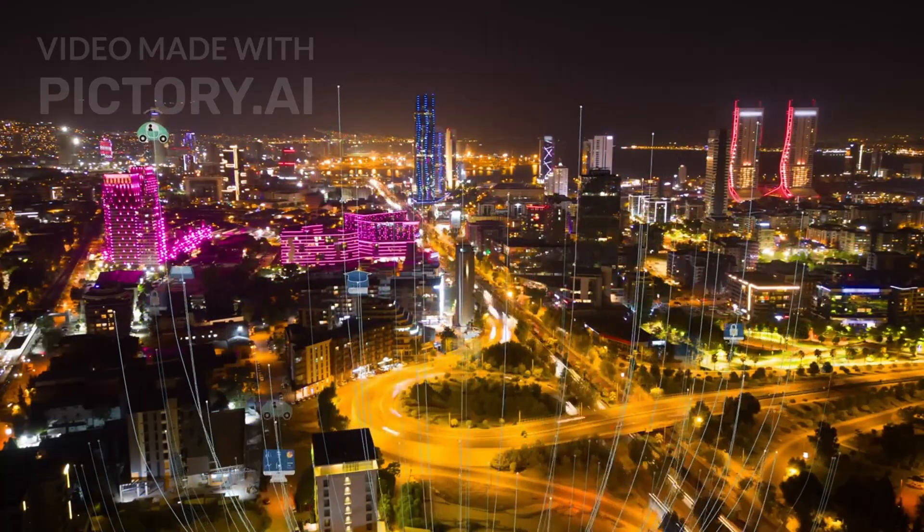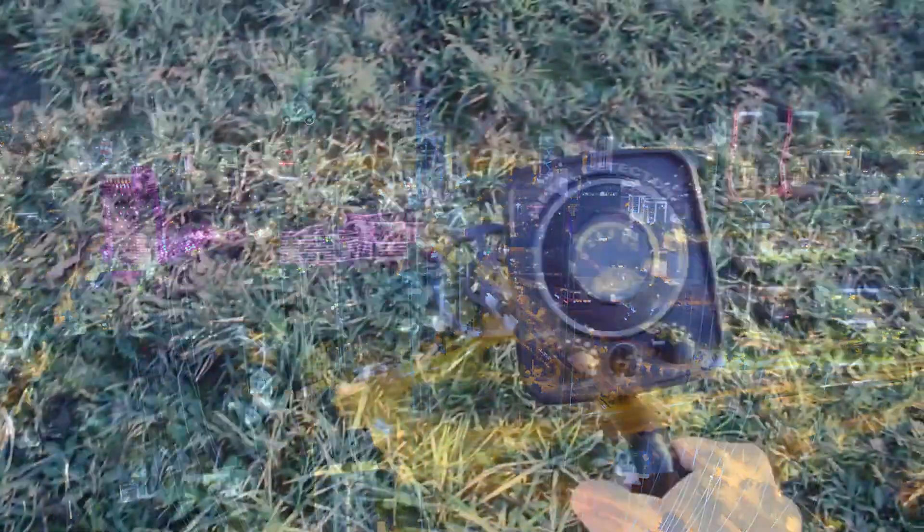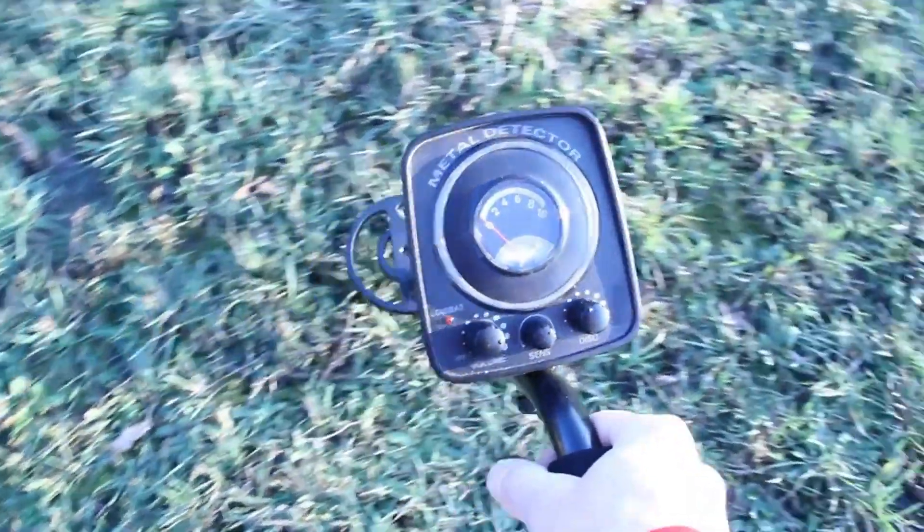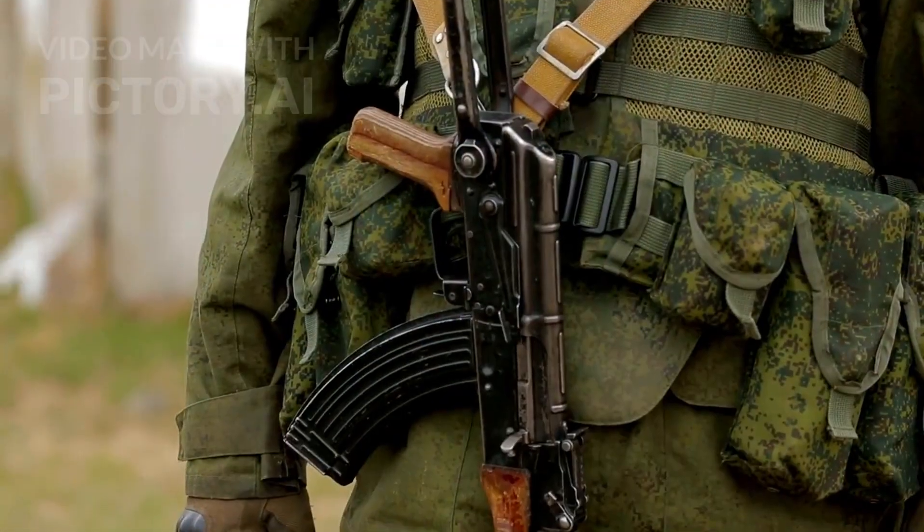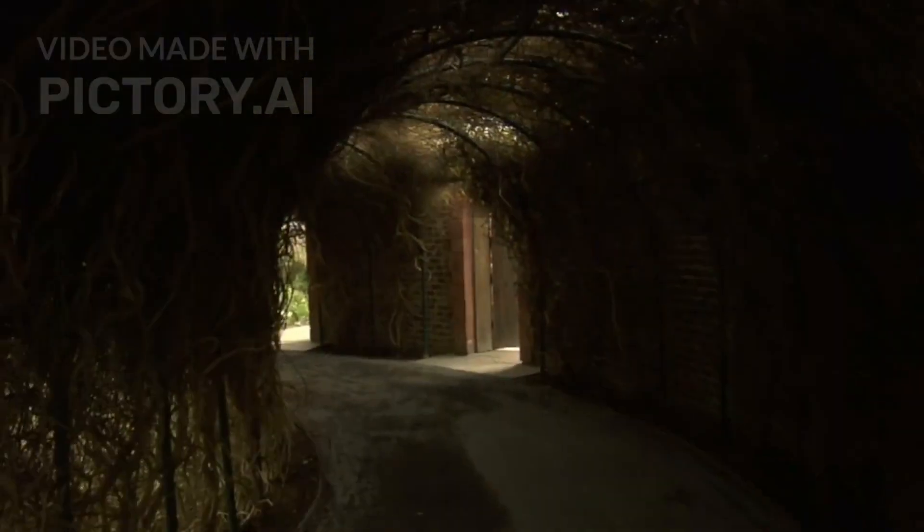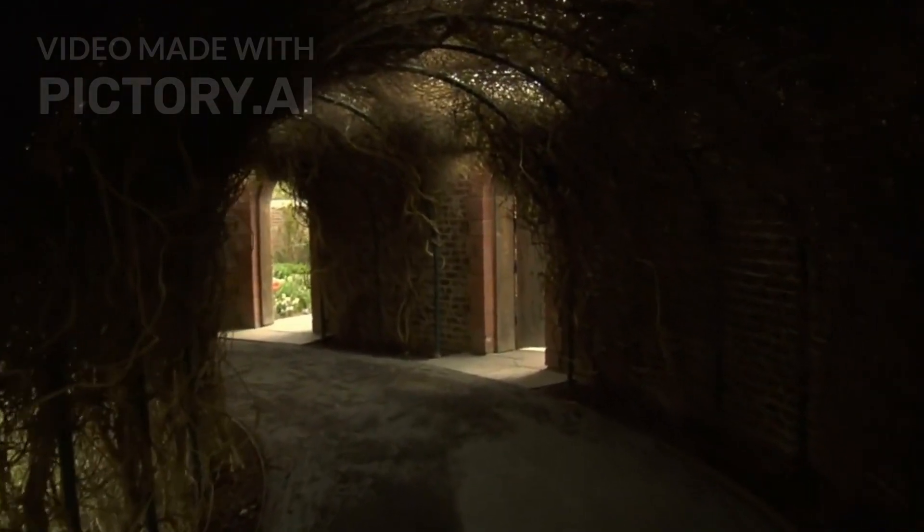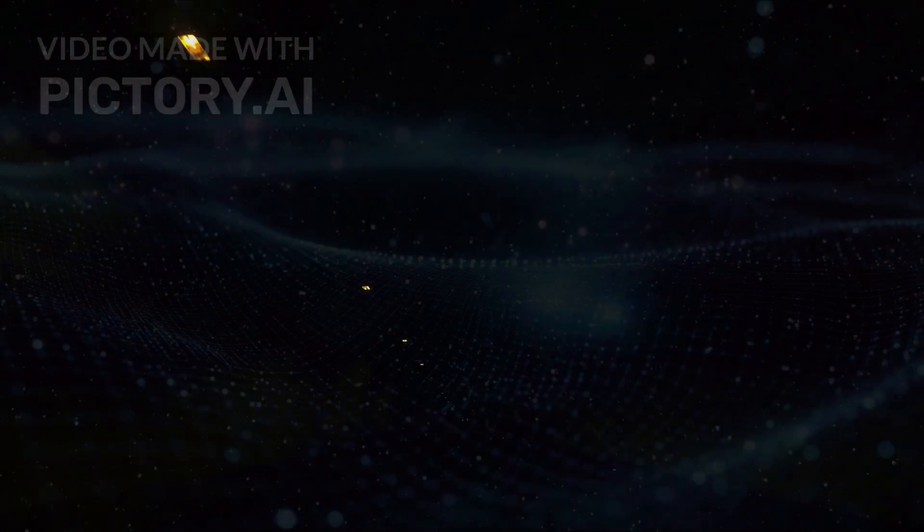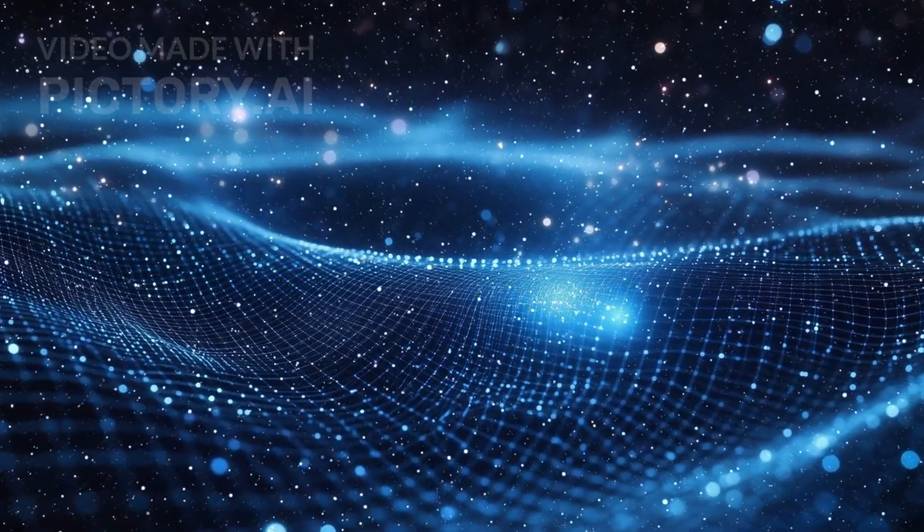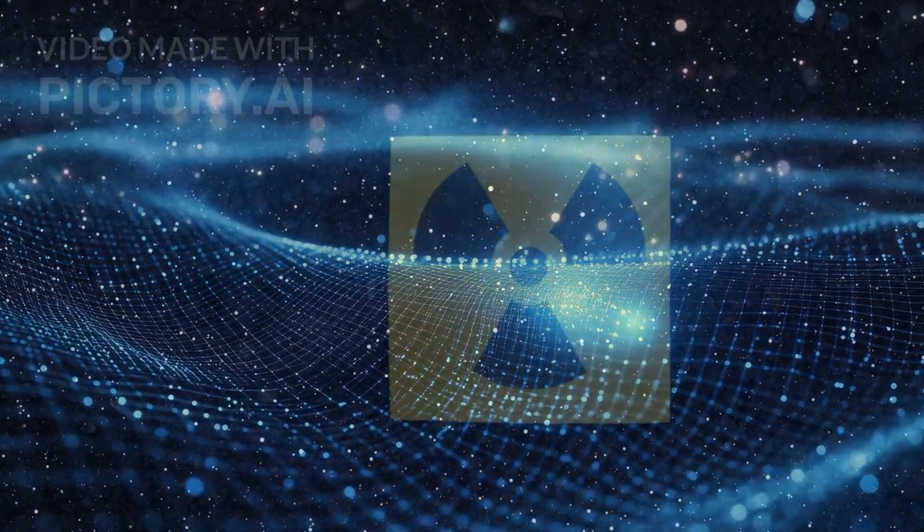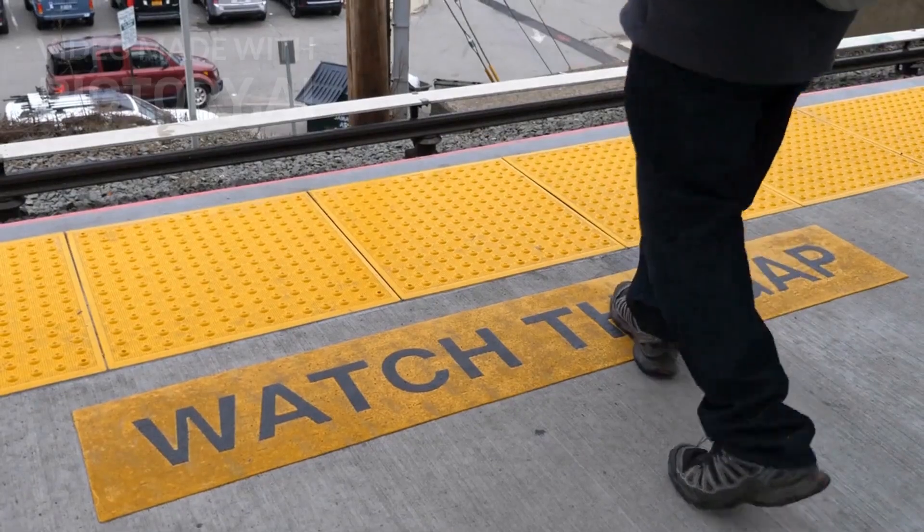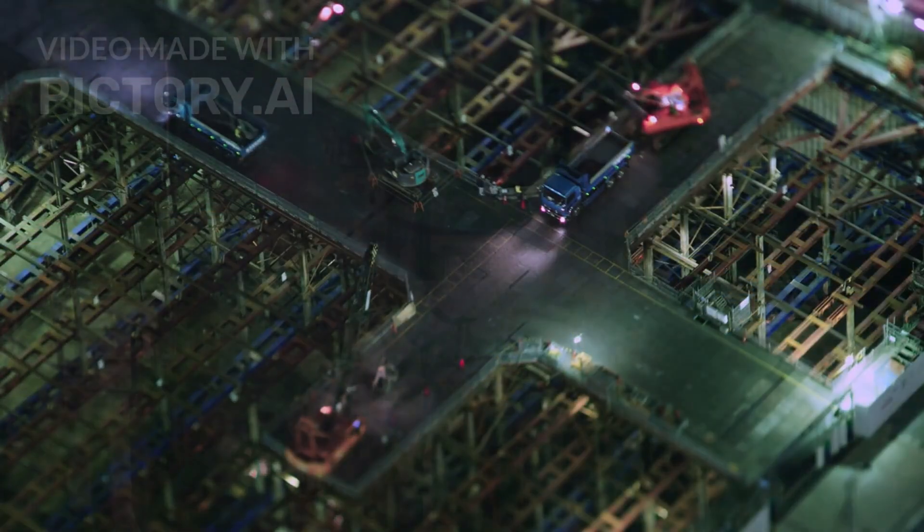But quantum sensors don't stop there. They can also detect gravitational anomalies. This means they can peer underground and identify what's hidden, without digging, drilling, or touching the surface. Imagine a soldier standing in a field. Beneath the soil, 50 meters down, lies a concealed tunnel. With conventional tools, it might go unnoticed. But a quantum gravity sensor, scanning the ground, would notice something subtle: a change in local gravitational pull, a tiny dip, a gap, the absence of mass. And that's all it needs.